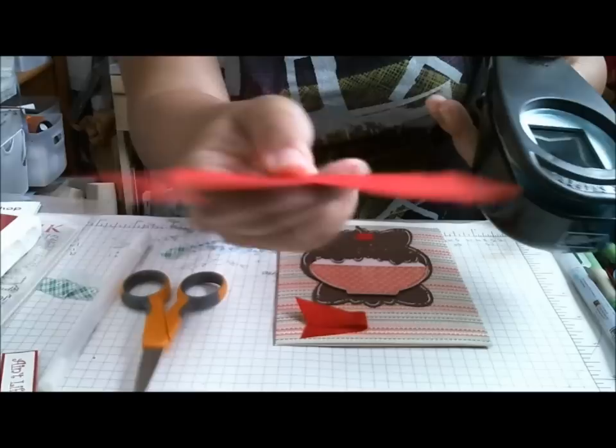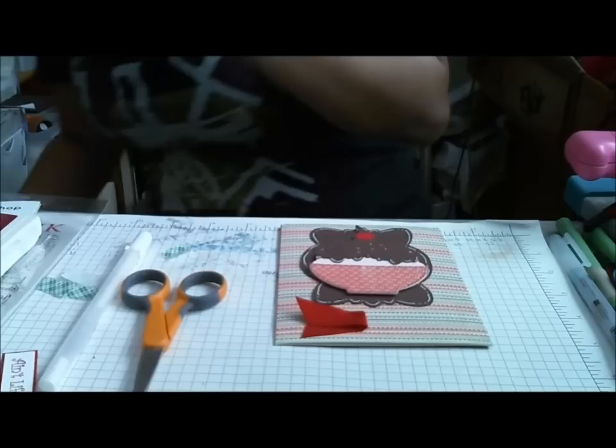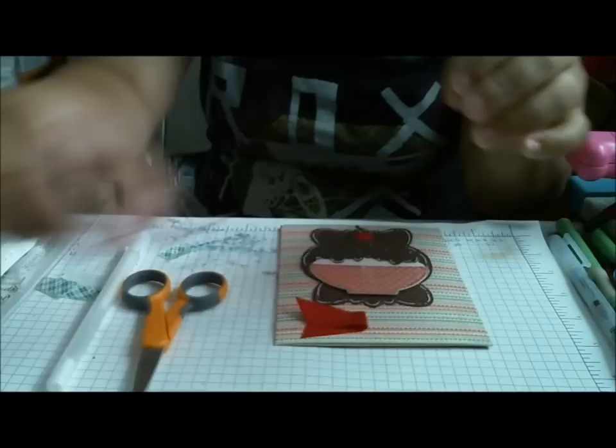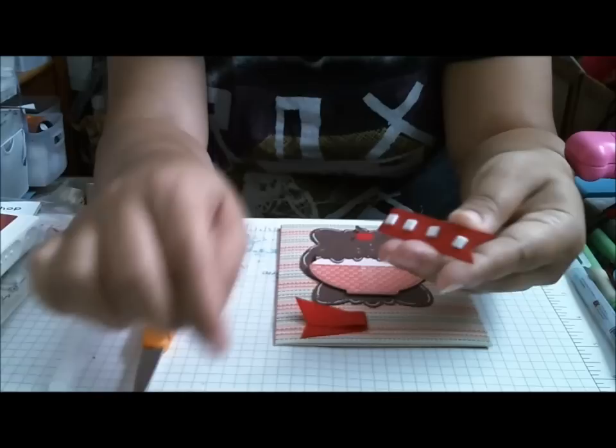So I take my paper and I create a little notch that way. Quick and easy way—I mean, you know, there's a lot of banner dies and things like that now, but that was just the quick and easy.